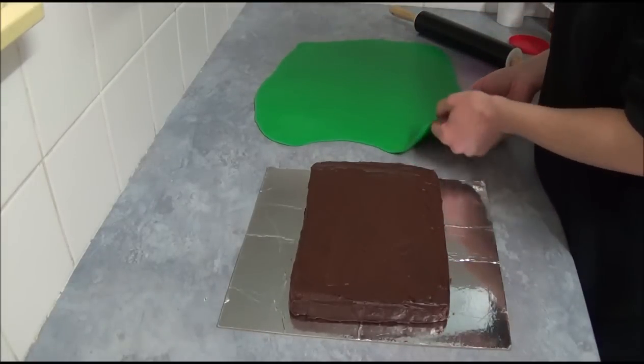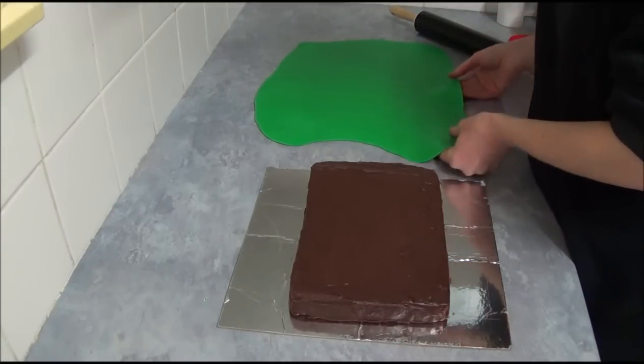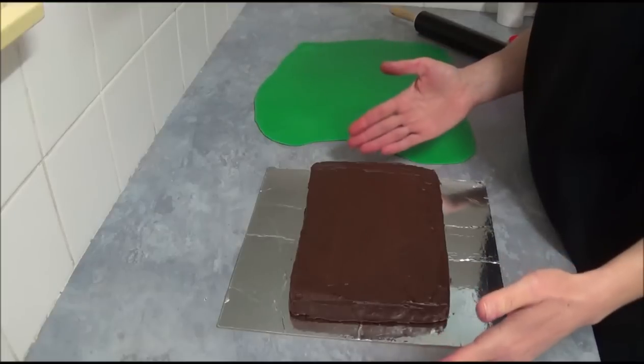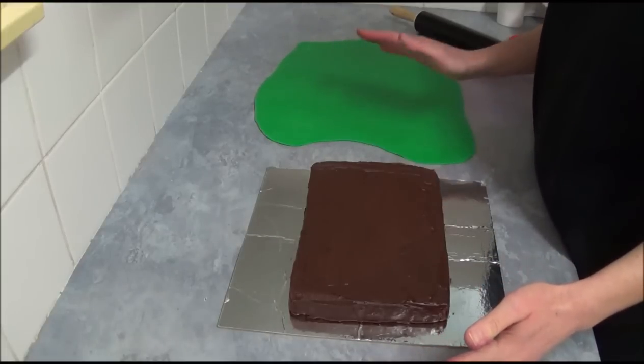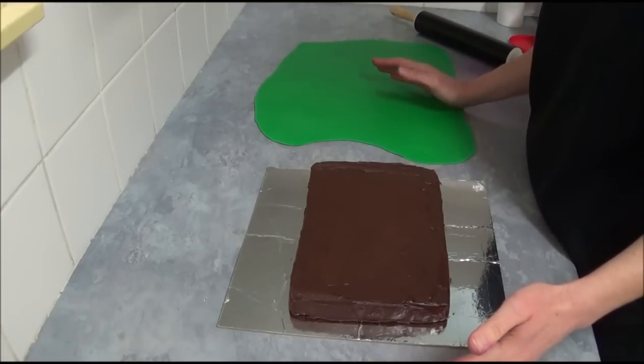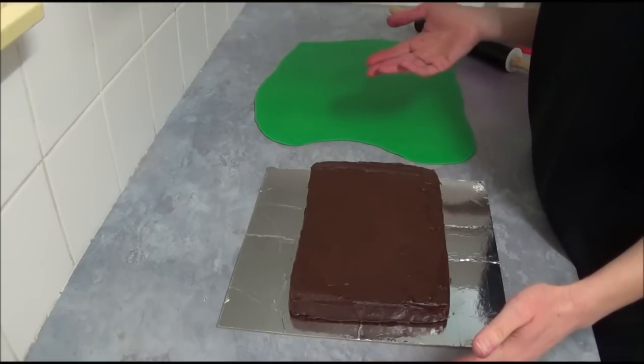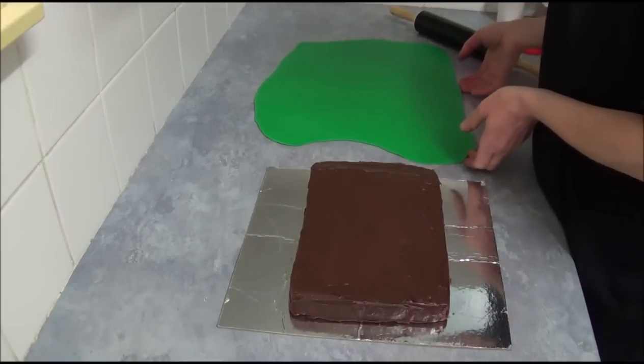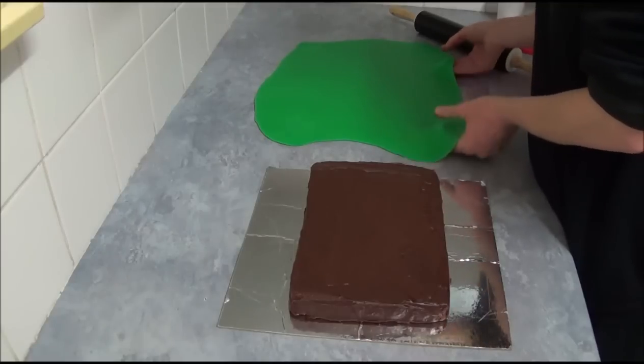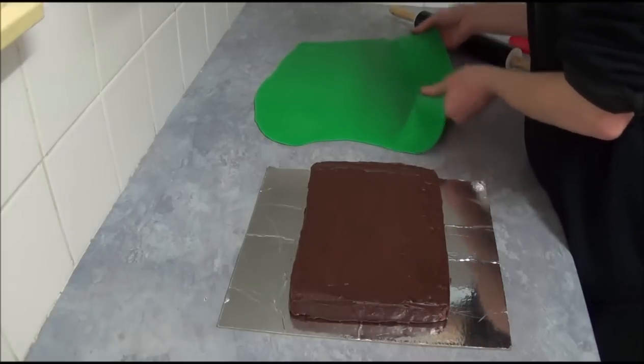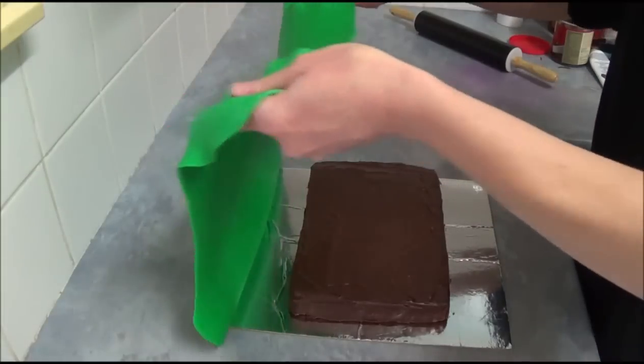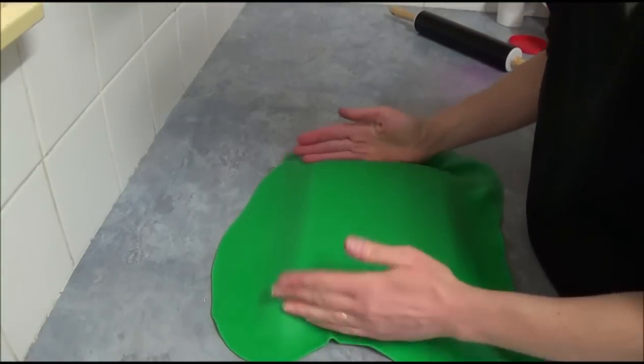We have here green fondant, which we roll in a size bigger than your cake. If you don't have green fondant, use white fondant and just simply tint it with green gel food coloring like Americolor or Wilton. Once you roll it in a size bigger than your cake, what we do is next we simply transfer it on top.